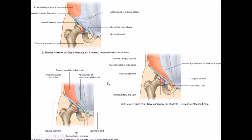The internal oblique muscle takes origin from the lateral two-thirds or one-third of the inguinal ligament, partly forms the anterior wall, and then runs above to form the roof of the canal. Similarly, the transverse abdominis takes partial origin from the inguinal ligament and also runs over the canal to form the roof. The internal oblique and transverse abdominis aponeuroses then join to form the conjoint tendon, which forms the posterior wall.